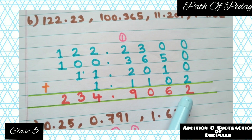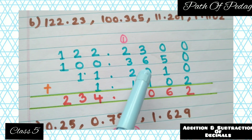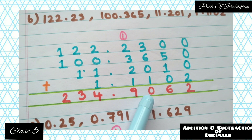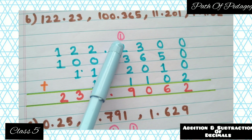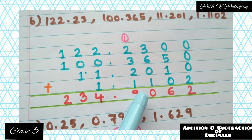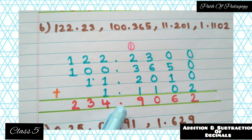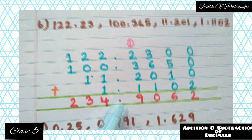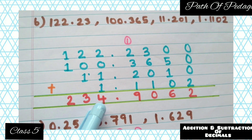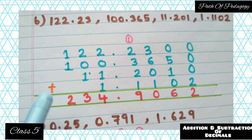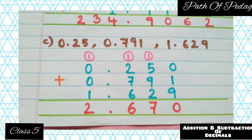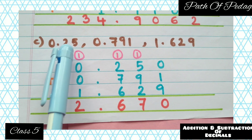Now add: 0+0+0+2=2; 0+5+1+0=6; 3+6+0+1=10, so write 0 and carry 1; 1+2+3+2+1=9; give the decimal point; 2+0+1+1=4; 2+0+1=3; 1+1=2. So the answer is 234.9062. Question c — arrange all the decimals.